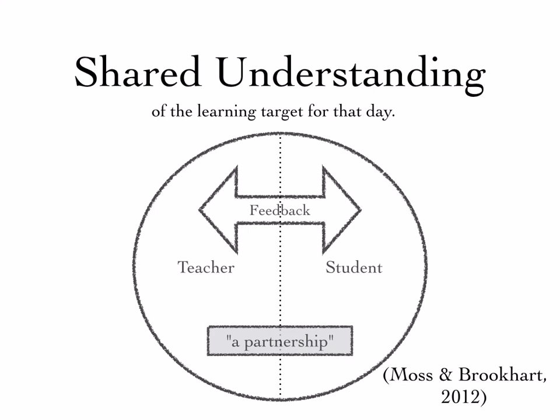What's critical is that the students understand the target as much as we do, and that happens through feedback. We think feedback happens teacher to student, but in fact the most important feedback, according to the authors, is the information coming from the student to the teacher — the type of feedback that will allow the teacher to alter their instruction. And it becomes a partnership, working together towards an overall goal.